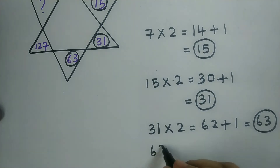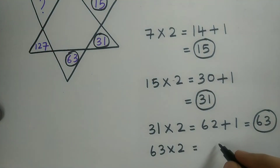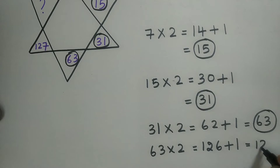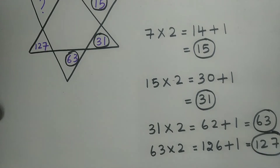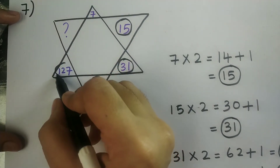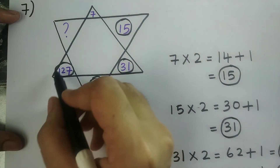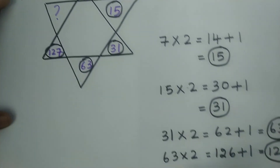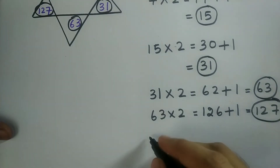Now I should write this value. So 63 into 2, which is equal to 126. And I should add this with 1, so I will be getting 127. This value is matching with the next box value. Now I should write this value, 127.